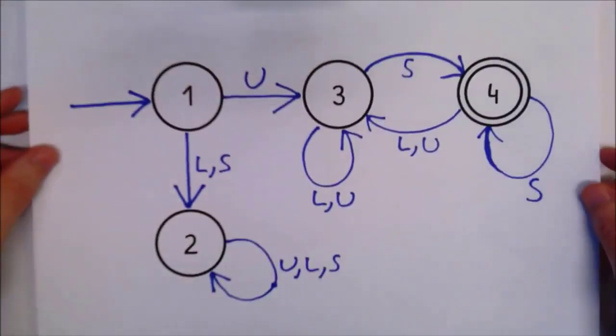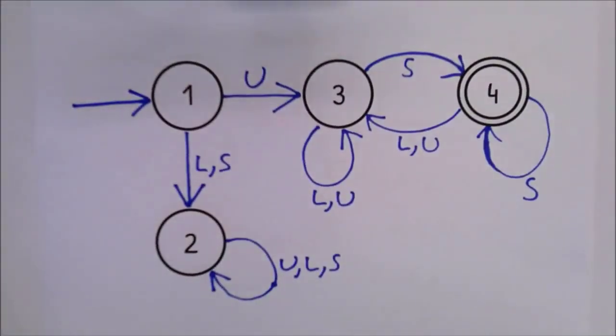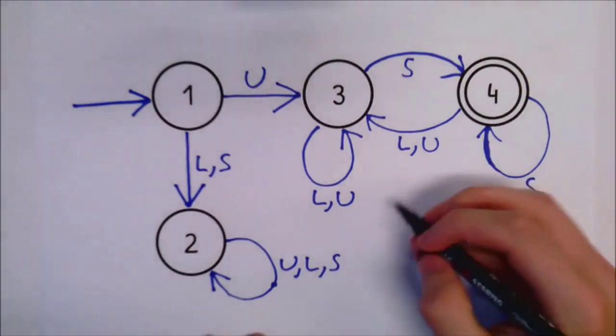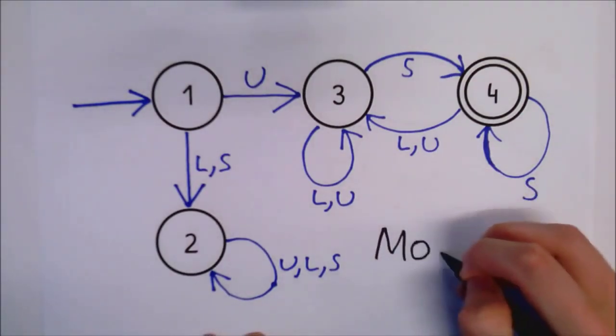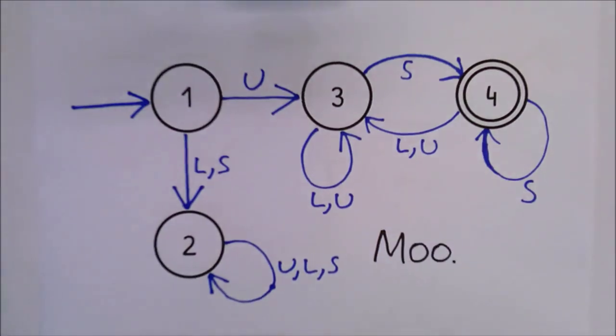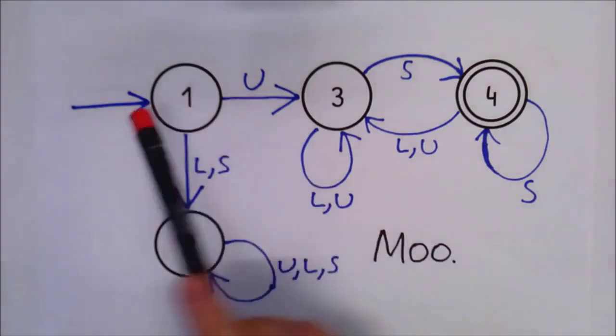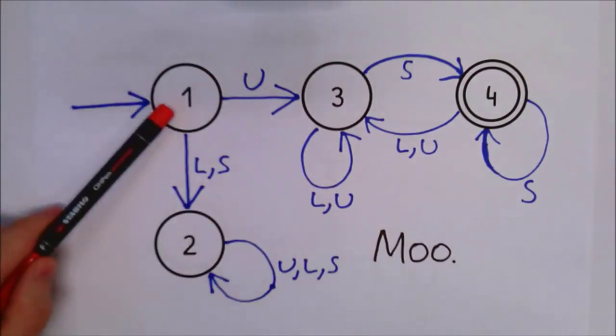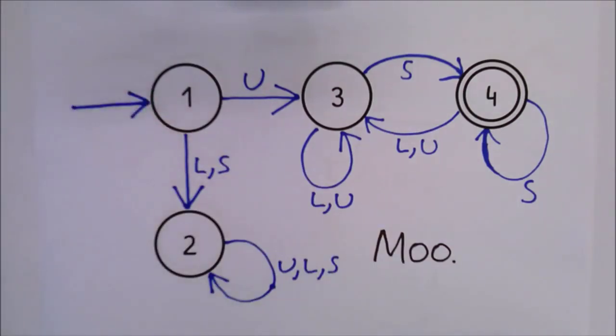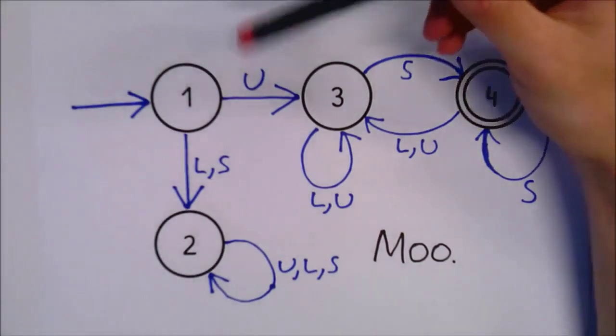Let's get a fresh diagram, exactly the same as before. How do we actually use it? Let's say we get the sentence Moo. We can already see that it starts with a capital letter and ends with a full stop. But let's run it through the automaton to see what happens. Beginning from the start state, which is 1, we take each character in turn, following the transition for each one.